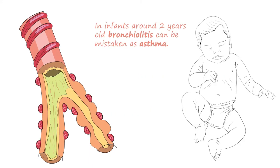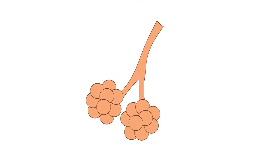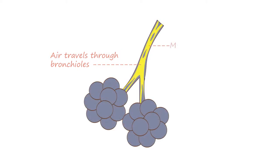In infants around 2 years old, bronchiolitis can often be mistaken for asthma. Bronchiolitis also causes air trapping, where oxygen can be inhaled but gets trapped in the lower respiratory tract in the alveolus due to surrounding inflammation, causing difficulty breathing for the infant.